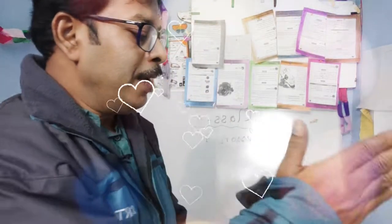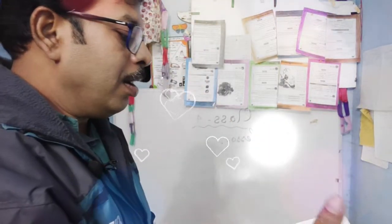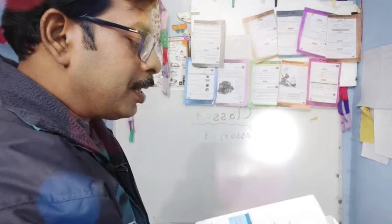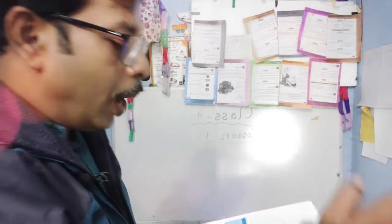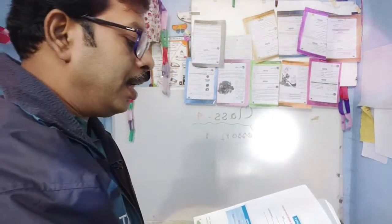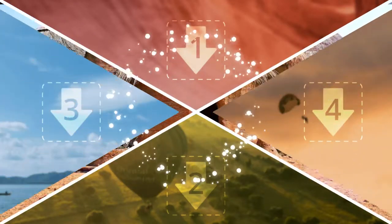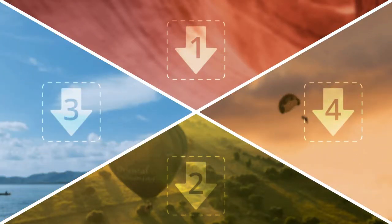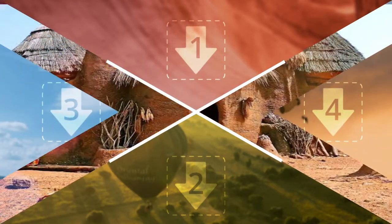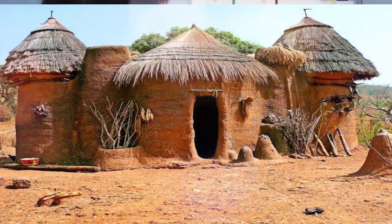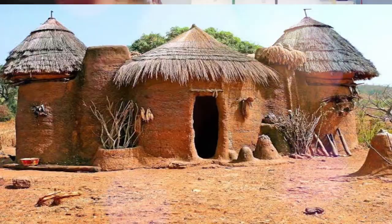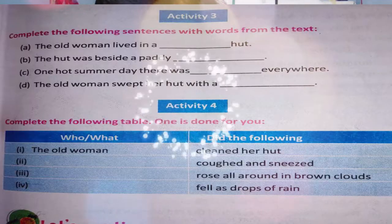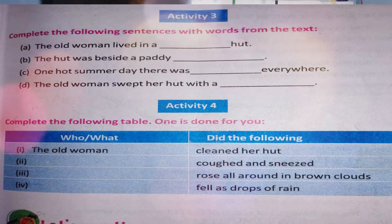The sky was very close and was like an umbrella. The old woman lived in a mud hut beside the paddy field. One hot summer day there was dust everywhere — the answer is dust. The old woman swept the hut with a broom. Activity number four: the old woman cleaned her hut, coughed and coughed, and sneezed.